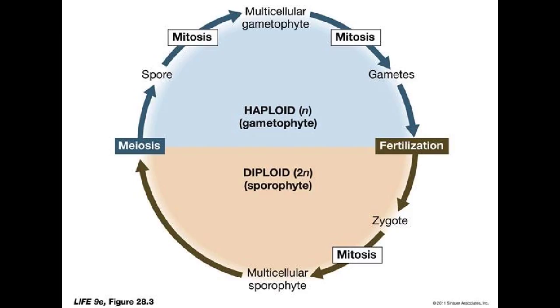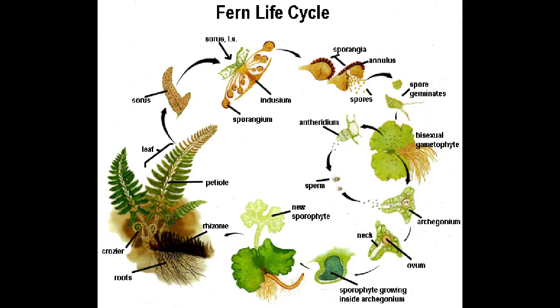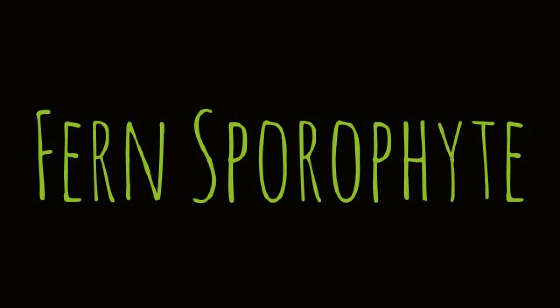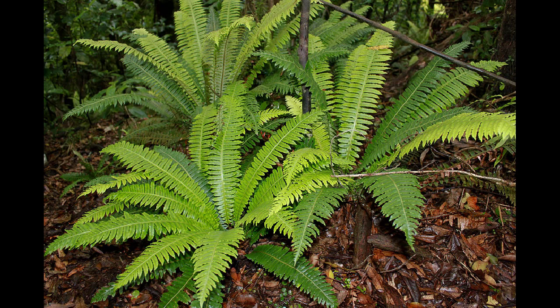An easy example of the alternation of generations is the life cycle of a fern. Beginning at a fully grown fern with reproductive capabilities, or sporophyte, the fern goes through several stages to reproduce.